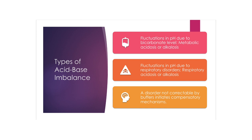Fluctuations in pH due to bicarbonate levels result in metabolic acidosis or alkalosis; fluctuations due to respiratory disorders result in respiratory acidosis or respiratory alkalosis, which usually involves CO2. When you get blood gases, CO2 relates to respiratory acidosis or alkalosis, and bicarbonate relates to metabolic.